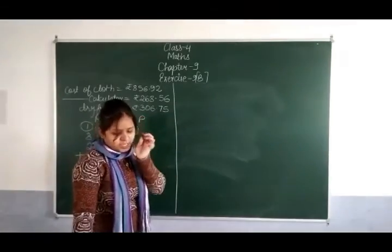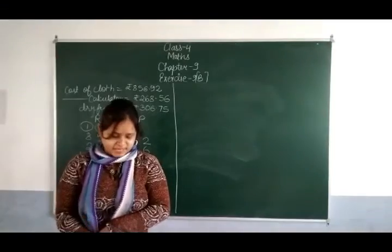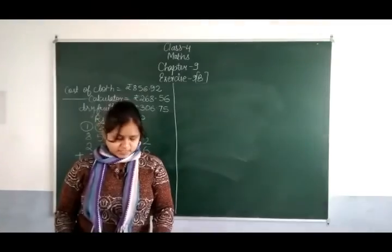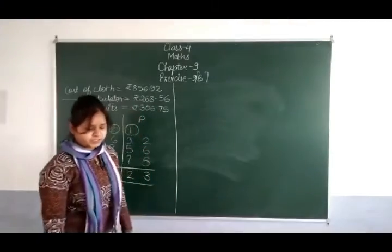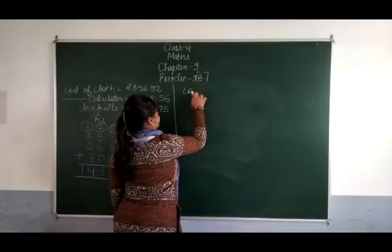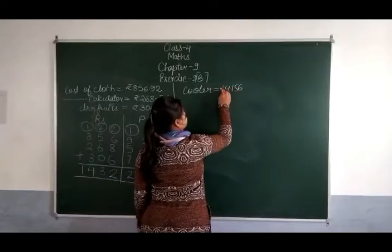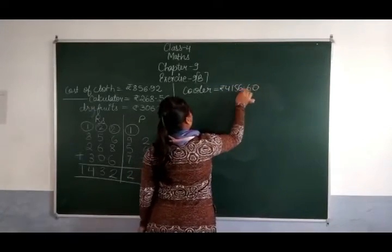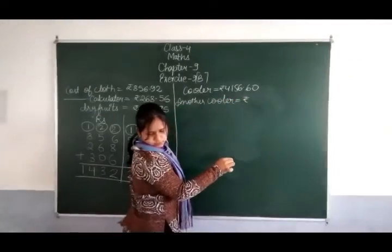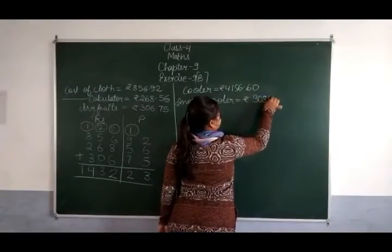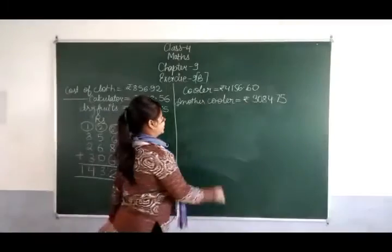What is the difference between their cost prices? एक cooler की cost 4,156 rupees 60 paise और दूसरे cooler की cost 3,084 rupees 75 paise। दोनों की cost में कितना difference आया? दोनों का difference find करना है, इसके लिए minus करेंगे। Column बना लेंगे — rupees, paise: 4,156 rupees 60 paise, minus 3,084 rupees 75 paise। Subtract करेंगे।